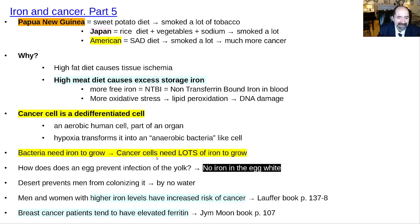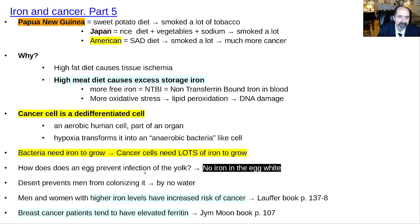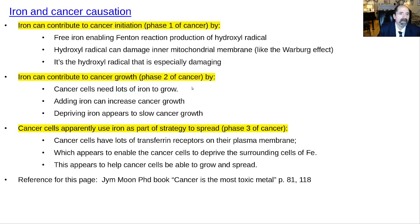Cancer cells, being de-differentiated and behaving like anaerobic bacteria, need lots of iron to grow. Cancer cells will put out tons of transferrin receptors on their plasma membrane to grab iron and take it in. They want iron and they want glucose. Elevated iron levels can actually contribute to each of the three phases of cancer: initiation, promotion, and metastasis. Free iron enables the Fenton reaction to produce hydroxyl radicals, which damage the mitochondrial membrane — similar to the Warburg effect concept — and hydroxyl radicals are especially damaging.